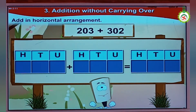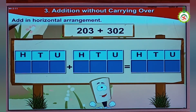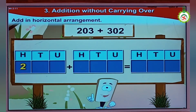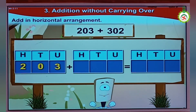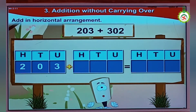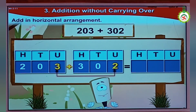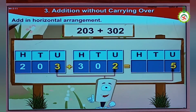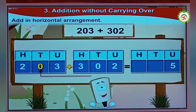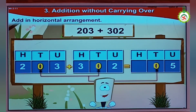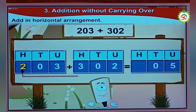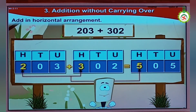Now the last sum: 203 plus 302. 203 would be 200, 0 tens, 3 units. Plus 302 is 300, 0 tens, 2 units. Now, 3 units plus 2 units is 5 units. 0 tens plus 0 tens is 0 tens. And 200 plus 300 is 500.